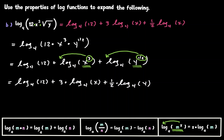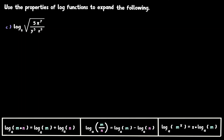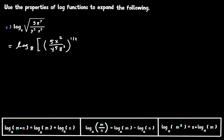Now let's take a look at our third example. This third example is a little bit more challenging, but let's take it one step at a time. The first thing I notice is that the square root is affecting the whole expression inside the log. So let's rewrite that square root as an exponent. Now that we can see that the whole inside of our log is raised to some exponent, we have a rule that says we can get that exponent and bring it to the front. Let's get this exponent of one half and bring it all the way up to the front.